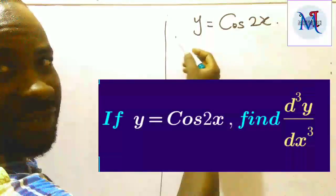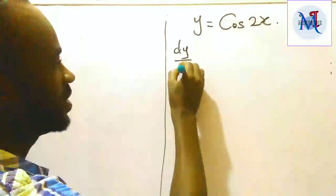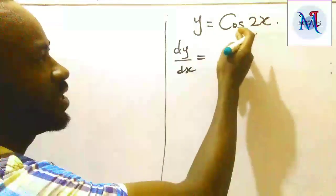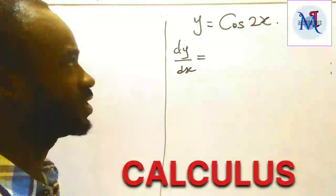We are given this function. The first thing to do is to find our first derivative. To differentiate a trigonometric function, this is how to do it.